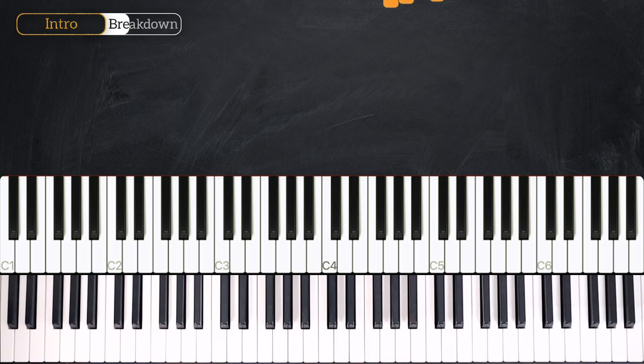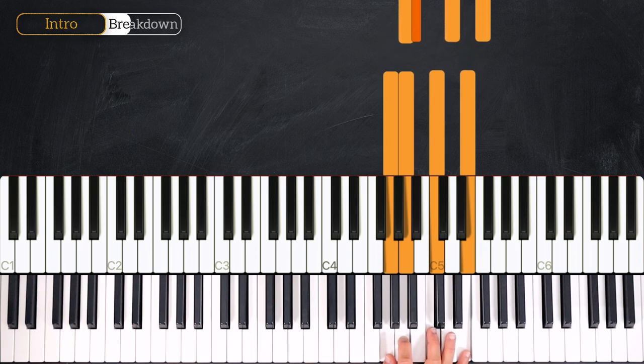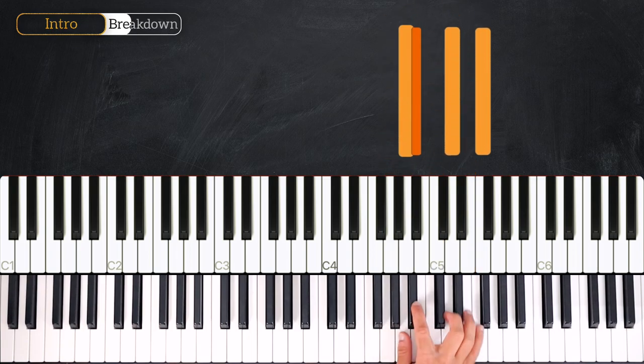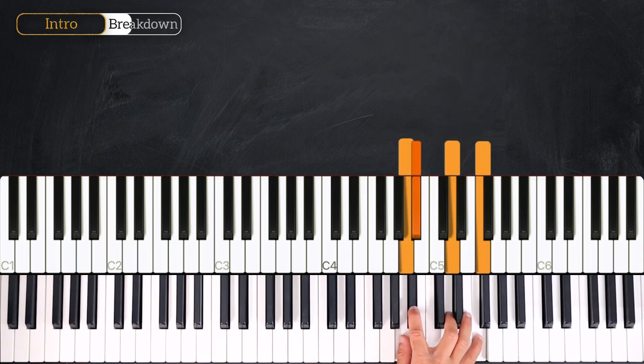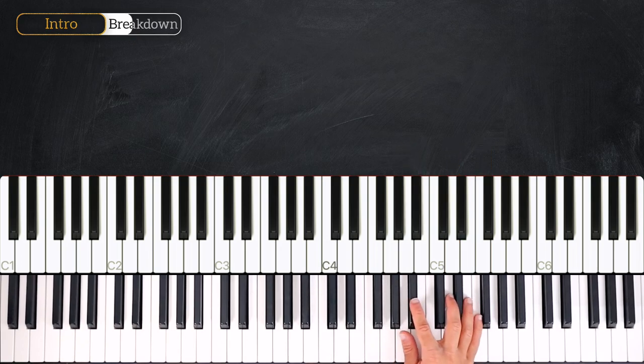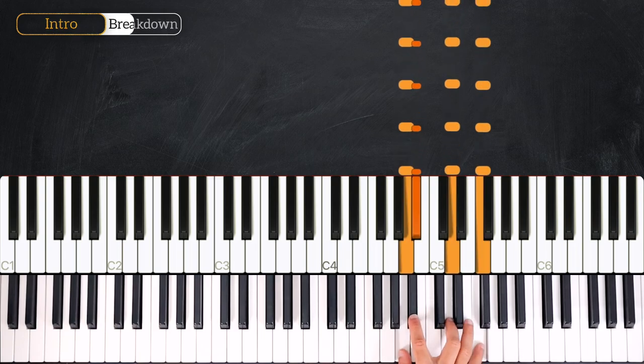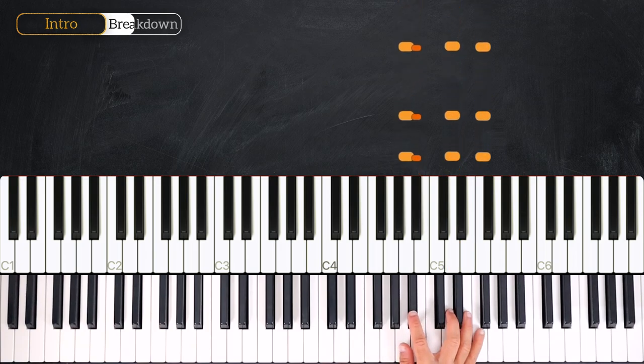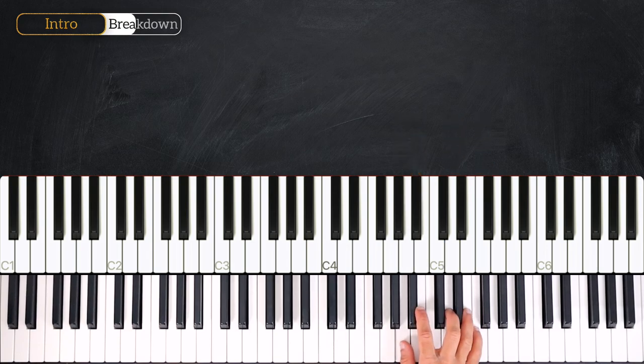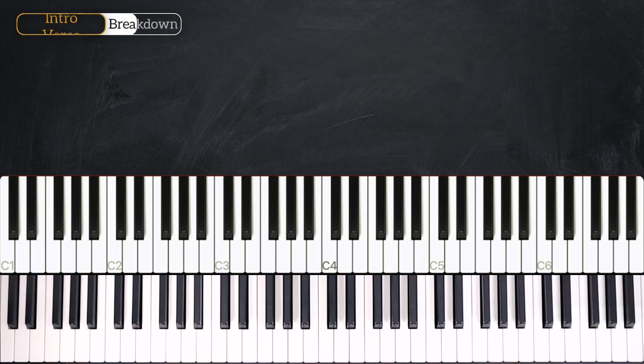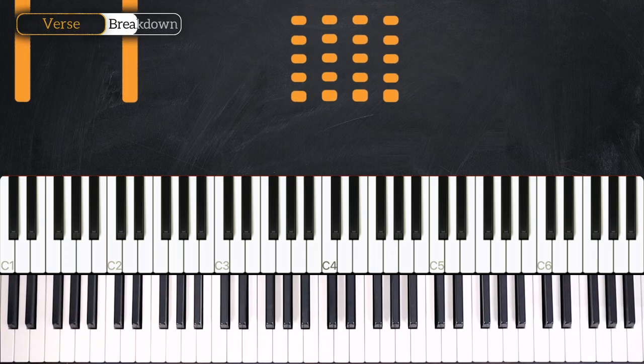Very nice. Then the next bar goes like this: 1, 2. Let's play those two bars: 3, 4 and 1, 2, 3, 4. Very nice. So for the introduction we do this on Am7 and we do the exact same rhythm on Bbmaj7. So it will go like this. We can add a little pedal. It goes like this: 3, 4, 1, 2, 3, 4 and 1, 2, 3, 4. Very nice. And that's all for the introduction. Now let's dive into the verse. It starts like this.